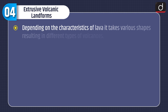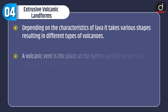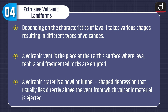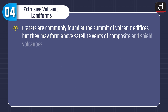Now let's discuss about extrusive volcanic landforms. Depending on the characteristics of lava, it takes various shapes resulting in different types of volcanoes. A volcanic vent is the place at the Earth's surface where lava, tephra, and fragmented rocks are erupted. A volcanic crater is a bowl or funnel-shaped depression that usually lies directly above the vent from which volcanic material is ejected. Craters are commonly found at the summit of volcanic edifices but may also form above satellite vents of composite and shield volcanoes.